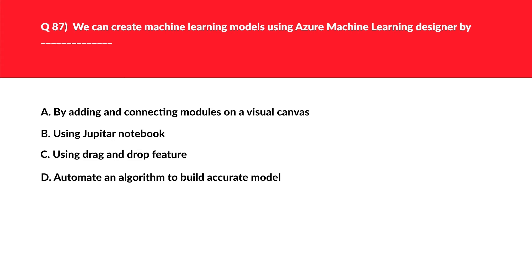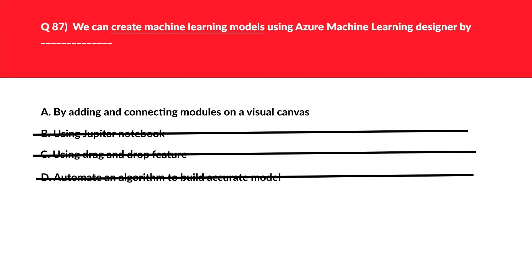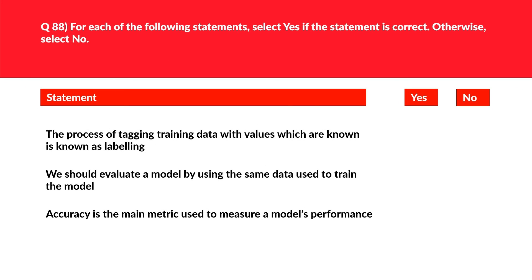We need to fill in the blanks: we can create machine learning models by adding and connecting modules on a visual canvas. Looking at option A — 'by adding and connecting modules on the canvas' — this looks correct. We'll keep this and reject the rest, logging it as the correct answer.